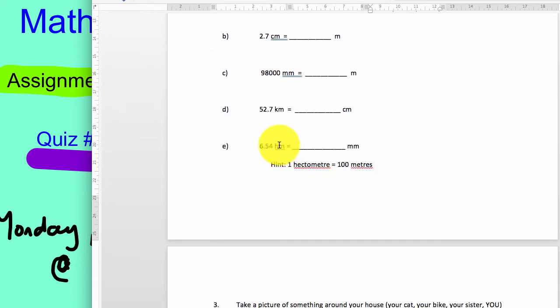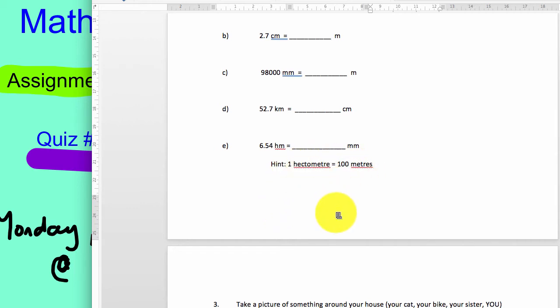E talks about hectometers. I don't think we've done that question with hectometers yet, but I give you a hint. So there's everything you need to know right there. One hectometer is 100 meters. That's true. I didn't just make that up. That's true.